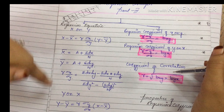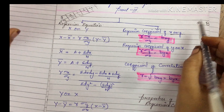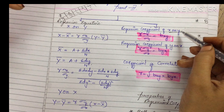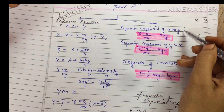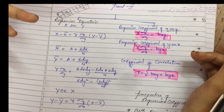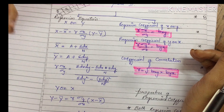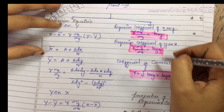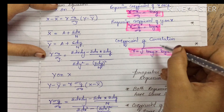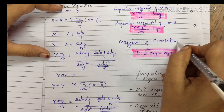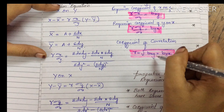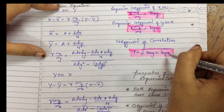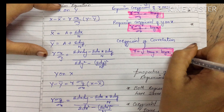If values like 0.57 or 3.25 are directly given (i.e., regression coefficients are given), then we use the formula: r equals under root of bxy into byx.